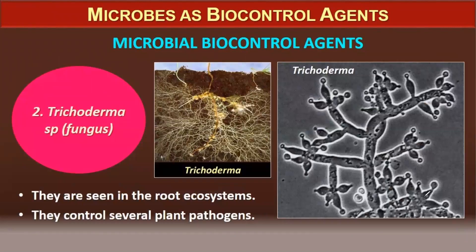Another example of a microbial biocontrol agent is Trichoderma, a fungal species seen in root ecosystems. They control several plant pathogens. When Trichoderma lives associated with the roots of a plant, the plant gets protected from several other kinds of pathogens.